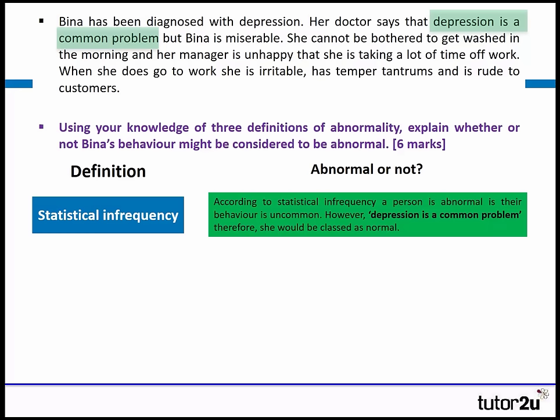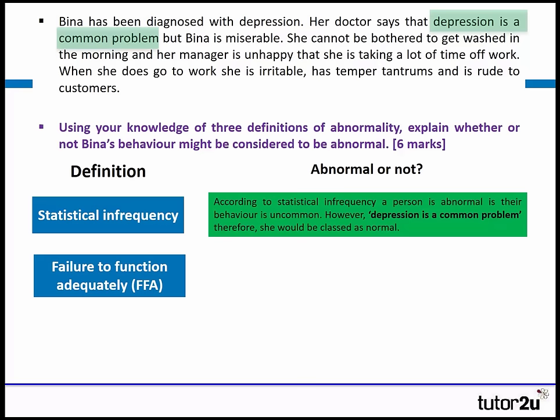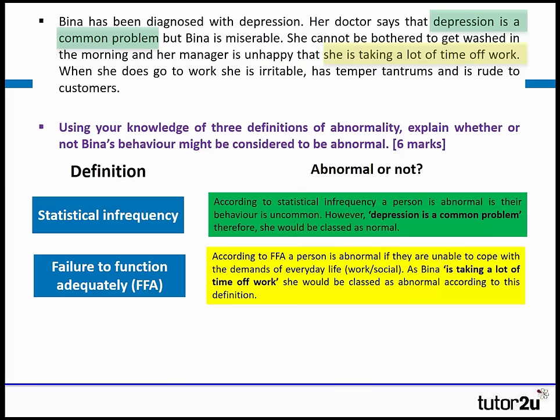We need to move on and do two more because the question asks for three. We might take failure to function adequately. Looking through the extract, she's taking a lot of time off work. So according to the FFA, a person is abnormal if they're unable to cope with the demands of everyday life — work or social life is impaired. In this case, it's clearly her work.